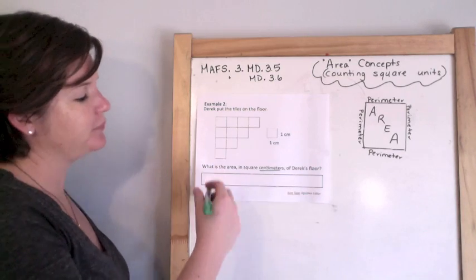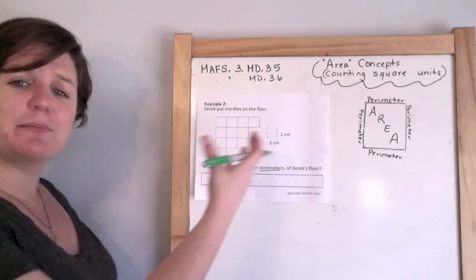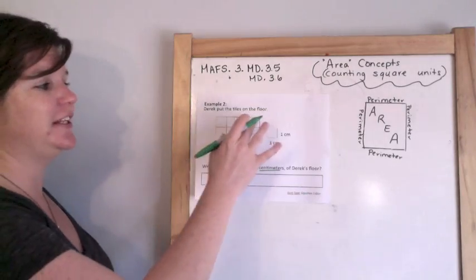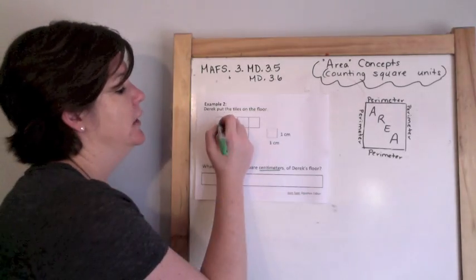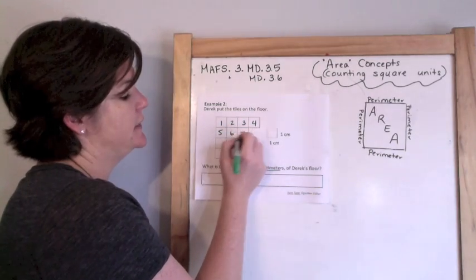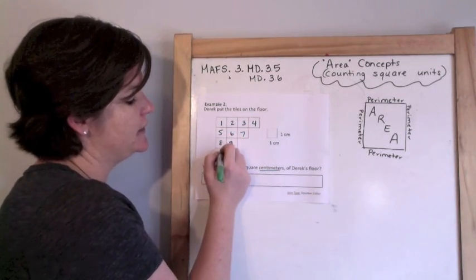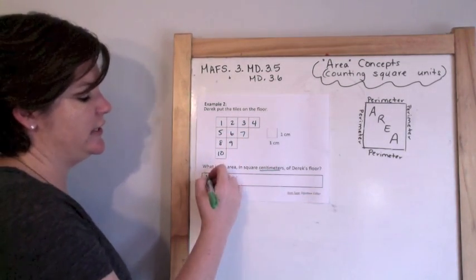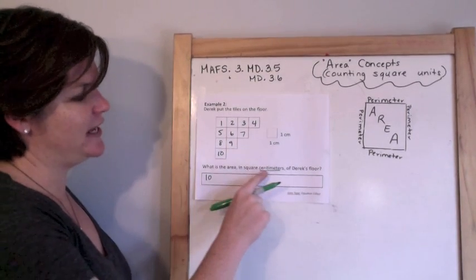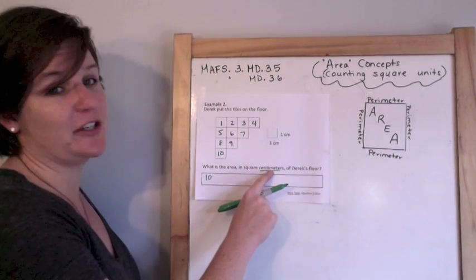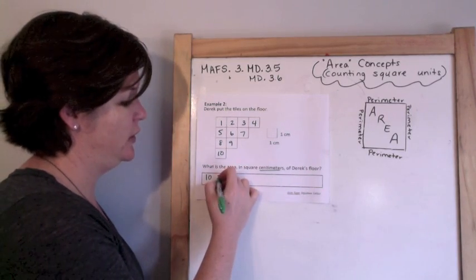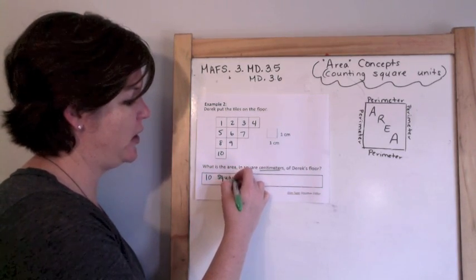For area today, we're simply working on counting the square units — counting the area that it's covering. 1, 2, 3, 4, 5, 6, 7, 8, 9, 10. So the area is 10, but don't stop there. It's not just 10 centimeters — area is special. Make sure you put square centimeters.